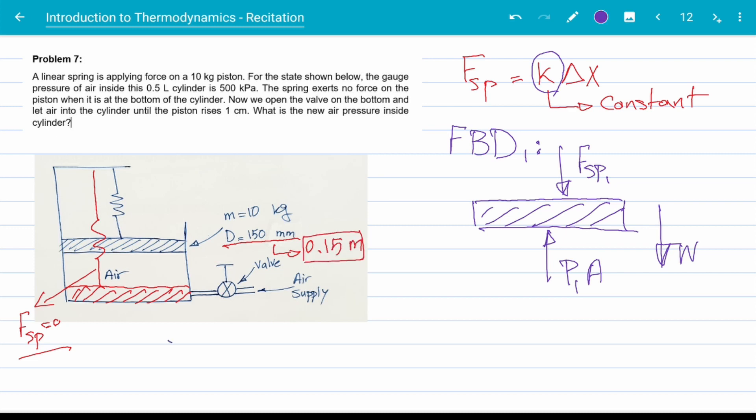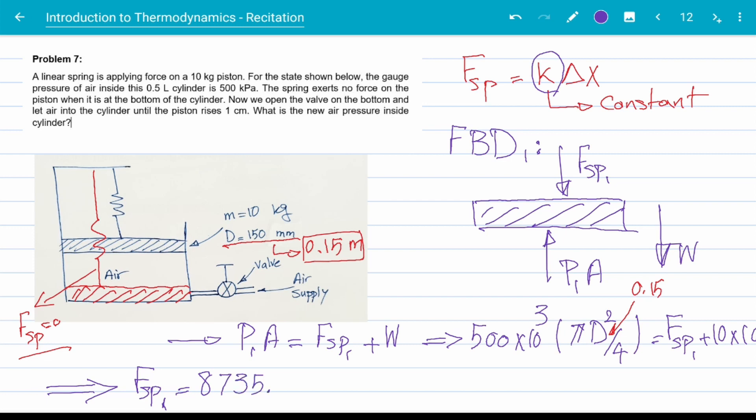Check unit consistency again. Diameter is given in millimeter and we need to change it to meters. Again, the piston has no motion. So P1 times A is equal to F of the spring plus W for the weight. Plugging numbers, changing kilopascals to pascals on the way, we get that F of the spring is 8735.7 N.